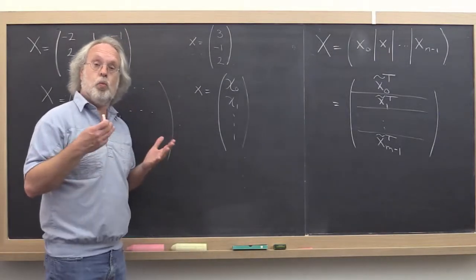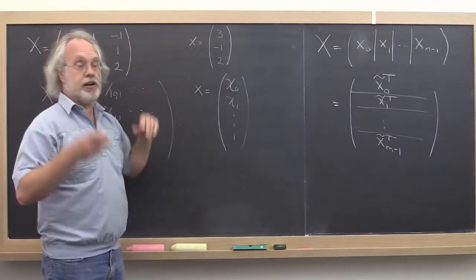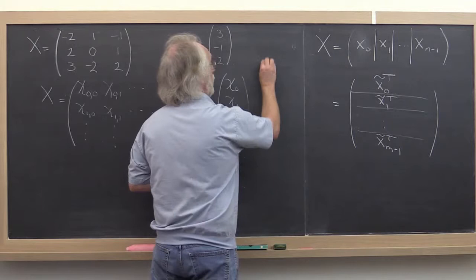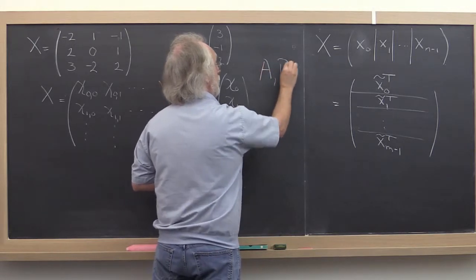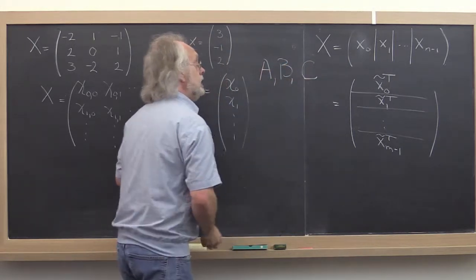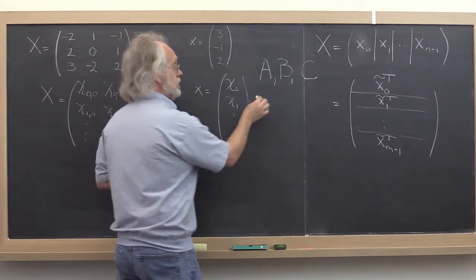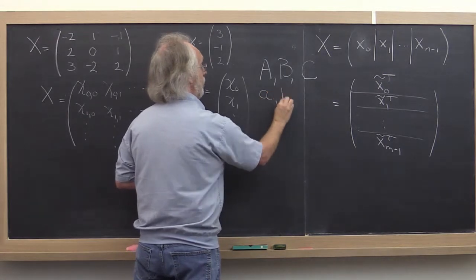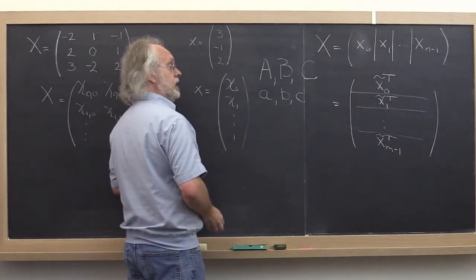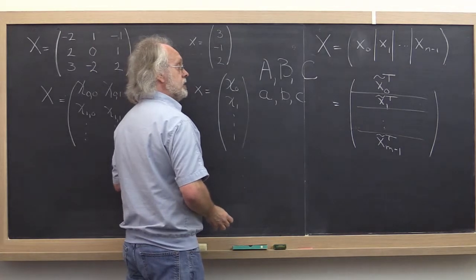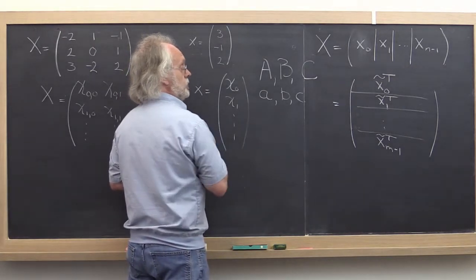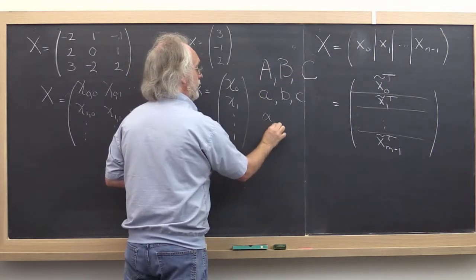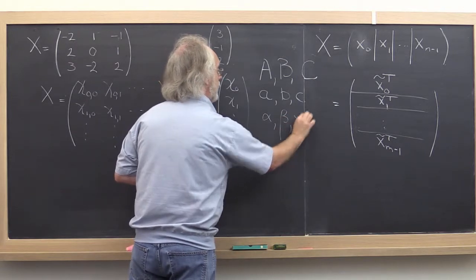So here we use x sort of as the generic matrix or the generic vector. In our discussions we will be dealing with matrices A, B, and C. And then the lowercase letters for denoting vectors will be a, b, and c. And the lowercase letters from the Greek alphabet that we will use to go with A, B, and C will be alpha, beta, and gamma.